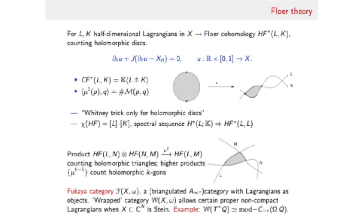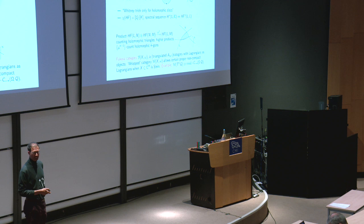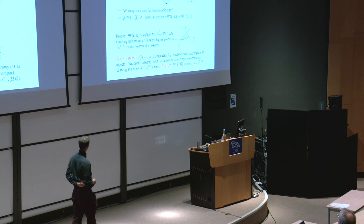In classical differential topology you study submanifolds by wiggling them around to meet minimally. In this cartoon, if you wanted to cancel two intersections of L and K, you would slide one of them across a disk with boundaries on the two submanifolds. In Floer theory you're only allowed to do this cancellation if there was actually a holomorphic disk there. So it's a refinement of classical surgery theory.